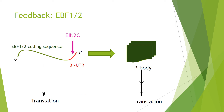Even without EIN2C, there's also negative regulation through XRN4, which is an exonuclease that degrades mRNA from the 5' to 3' end.